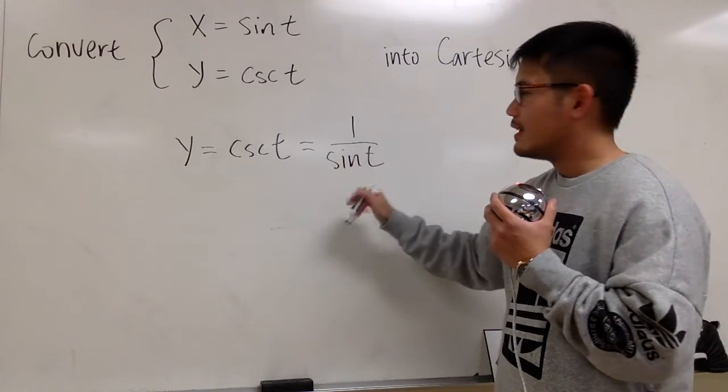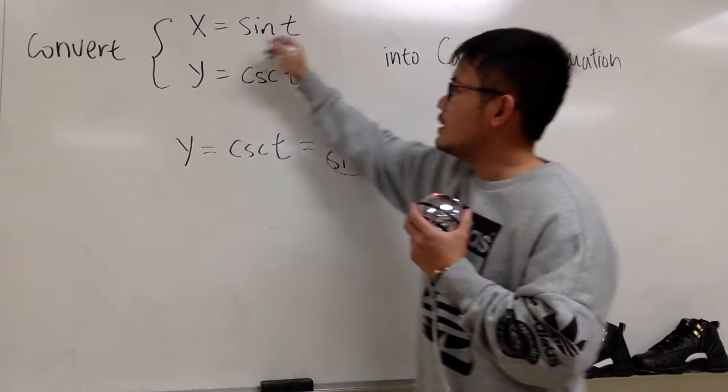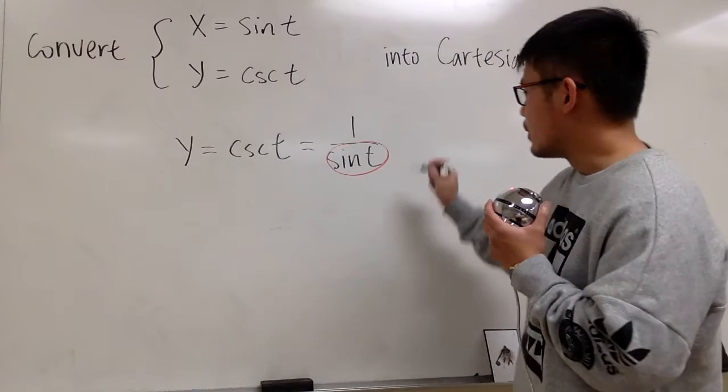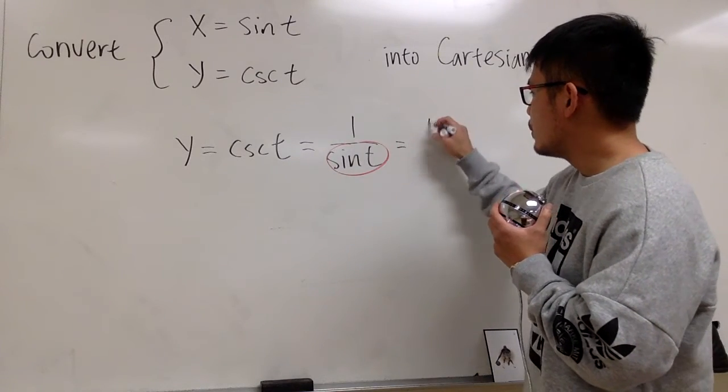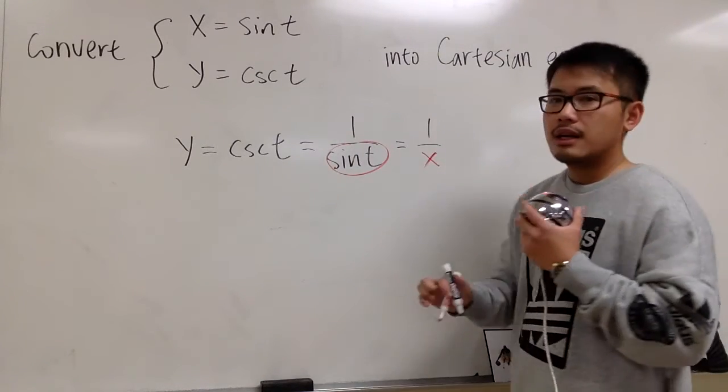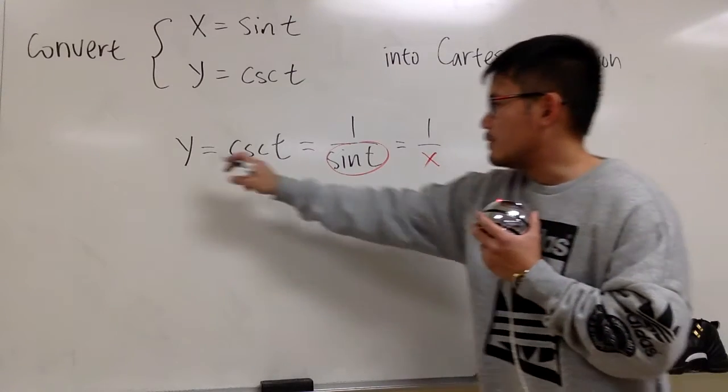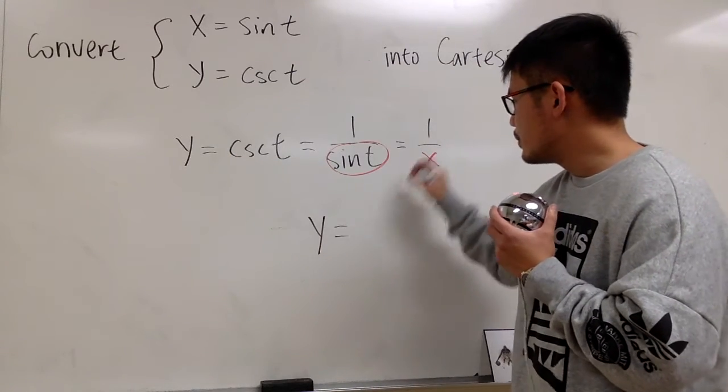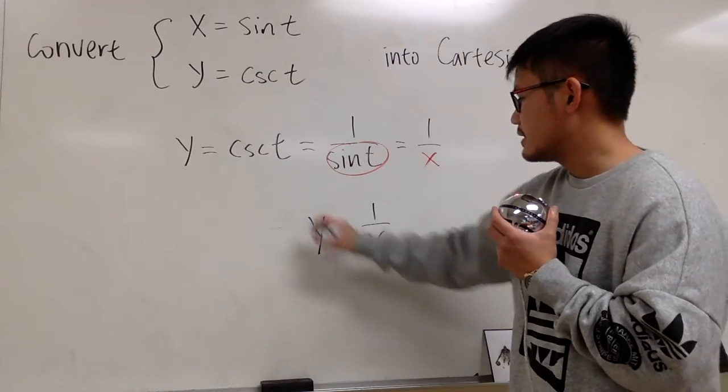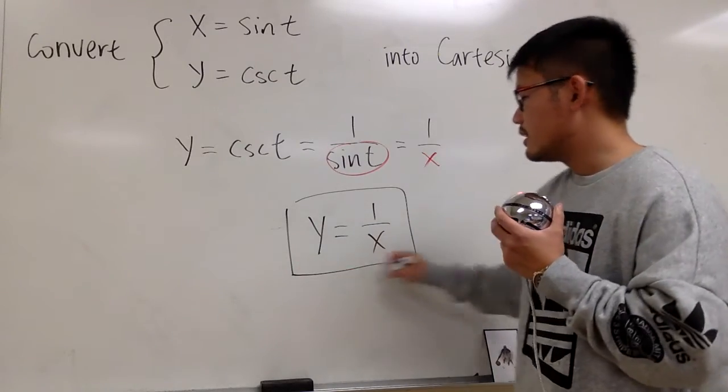And then what's sine t? Sine t is exactly what x is. So, in another word, this is equal to 1 over x. So, all in all, we have y is equal to 1 over x. And this right here is it.